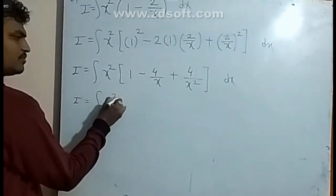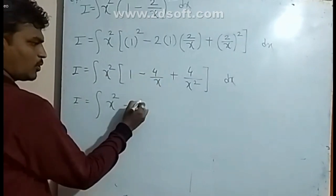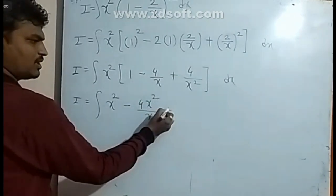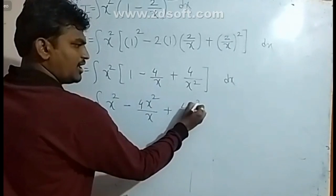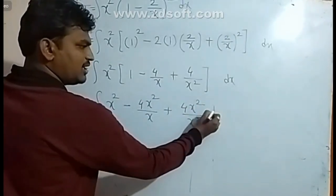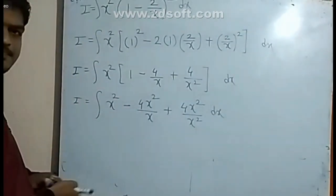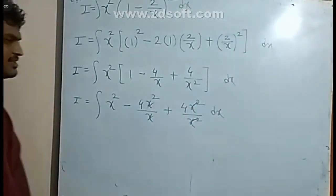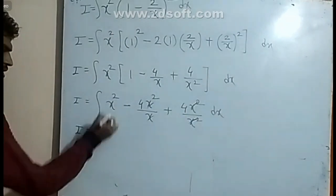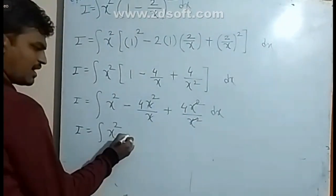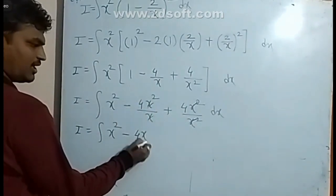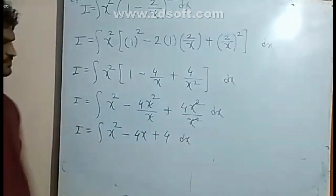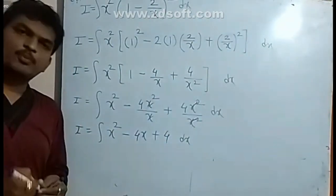x squared terms get cancelled: x squared by x squared gets cancelled. i is equal to — after expansion — x squared minus 4x plus x squared, and x squared terms get cancelled. Simple problem.